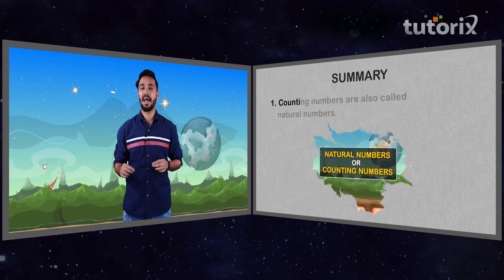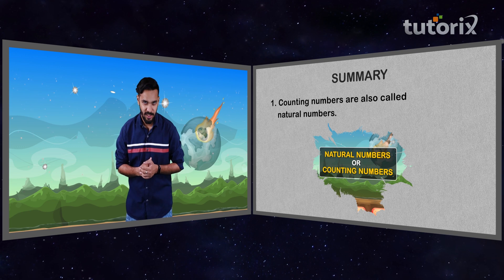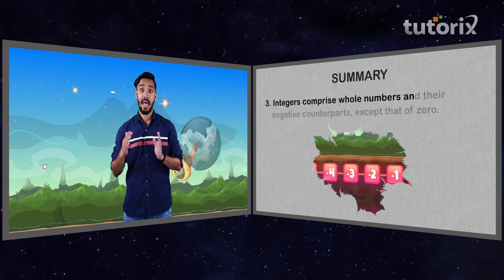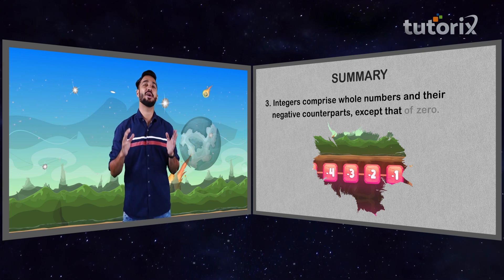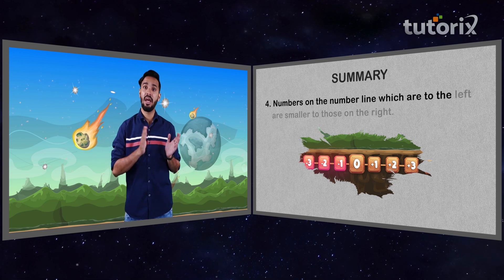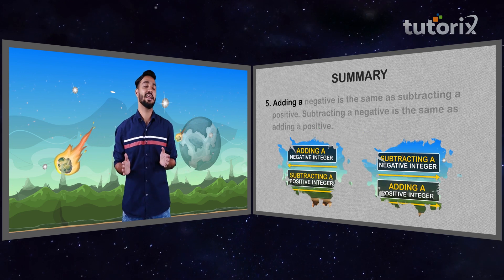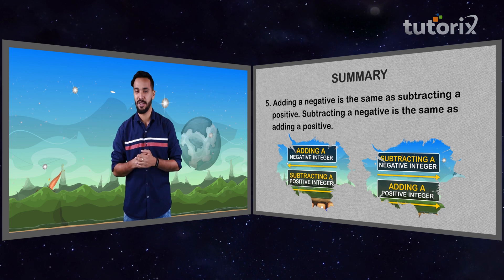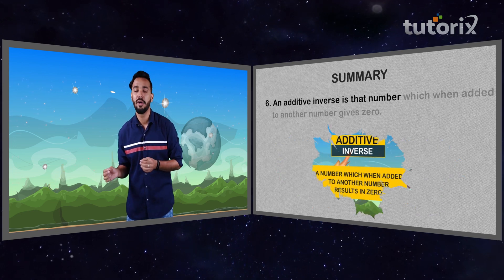That was a lot, right? But now that you've understood the concepts, you can easily understand the operations and their rules, which we'll be discussing in the next video. So let's quickly summarize. In today's video, we learnt all about integers. Counting numbers are also called natural numbers. Whole numbers comprise zero and natural numbers. Integers comprise whole numbers and their negative counterparts, except that of zero. Numbers to the left on the number line are smaller than those to the right. Adding a negative is the same as subtracting a positive. Subtracting a negative is the same as adding a positive. An additive inverse is that number which when added to another number gives zero.